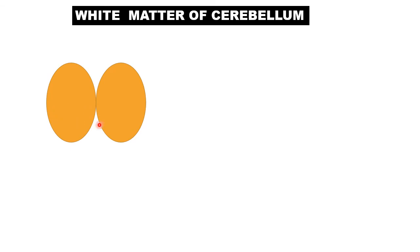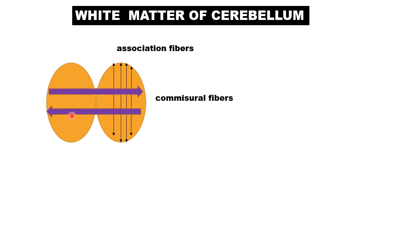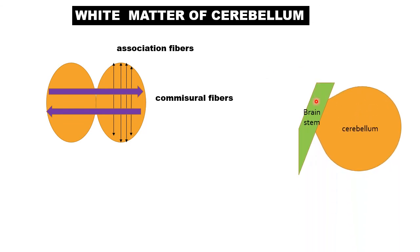Looking at the white matter of the cerebellum: association fibers connect the same-side hemisphere from front to back. Commissural fibers connect both hemispheres from right to left and left to right. The brain stem connects to the cerebellum via peduncles — the middle cerebellar peduncle, superior cerebellar peduncle, and inferior cerebellar peduncles.